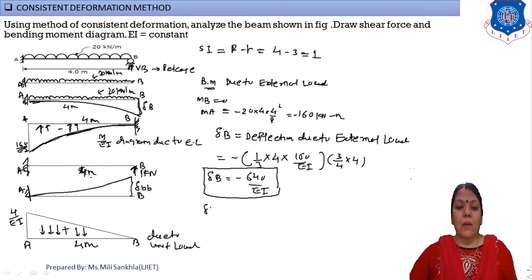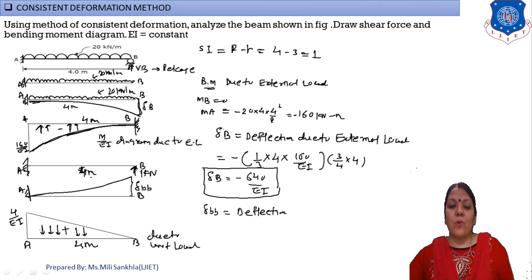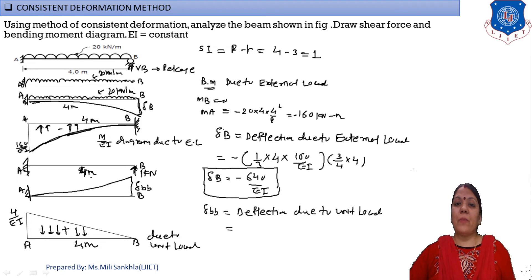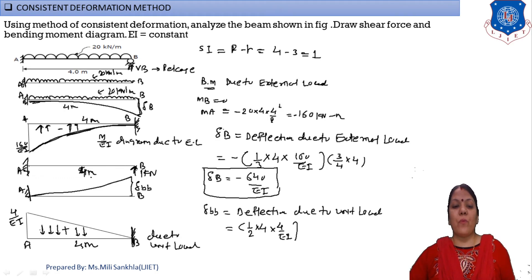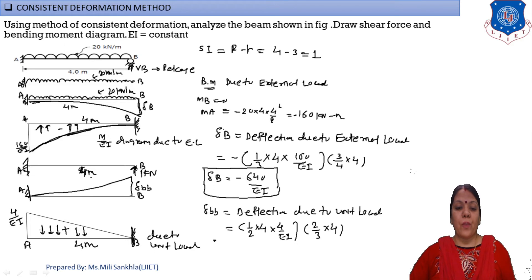Find delta_BB (deflection due to unit load). The M/EI diagram is a triangle (positive). Area = (1/2) × 4 × (4/EI). CG from B = (2/3) × 4 because it is a triangle measured from the apex. Therefore delta_BB = (1/2) × 4 × (4/EI) × (2/3) × 4 = 21.33/EI.